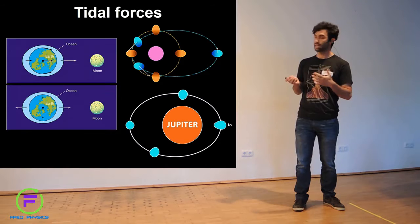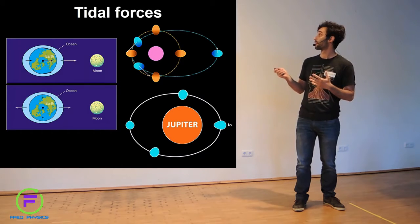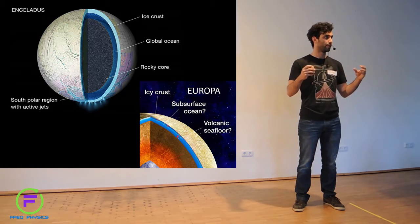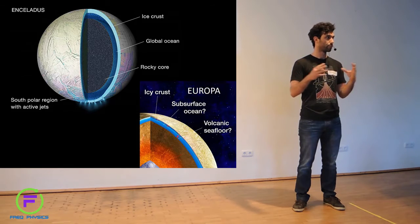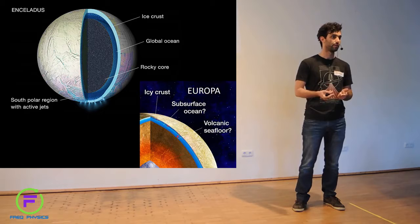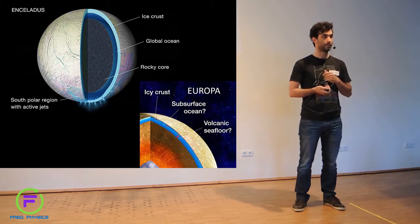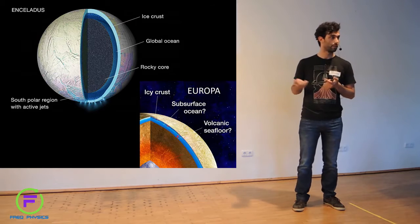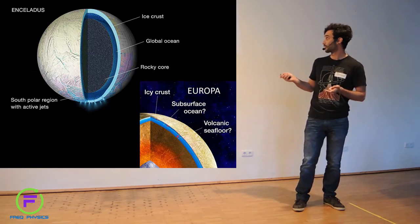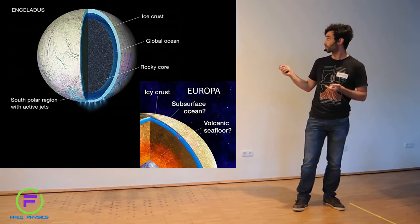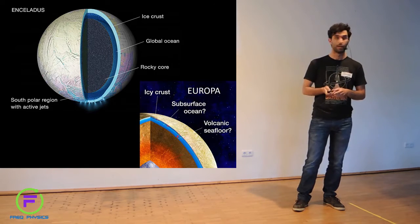You can imagine that this kind of deformation when you have a rocky core means that the rocky core deforms and becomes smaller and bigger, and then you have friction in the rocky core. So you have heat generated that is transferred into the ocean and it's maintained liquid. You can even see here a red hot core for Europa in this picture. And that's how you have energy.